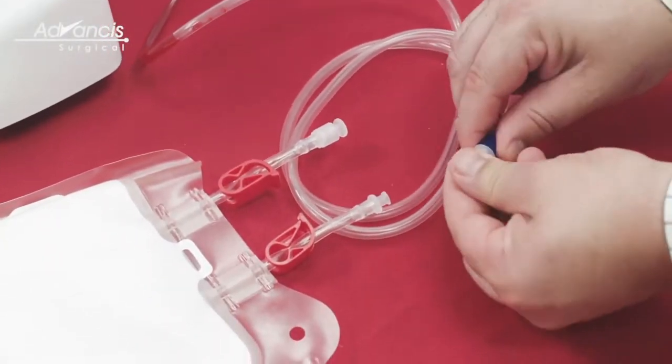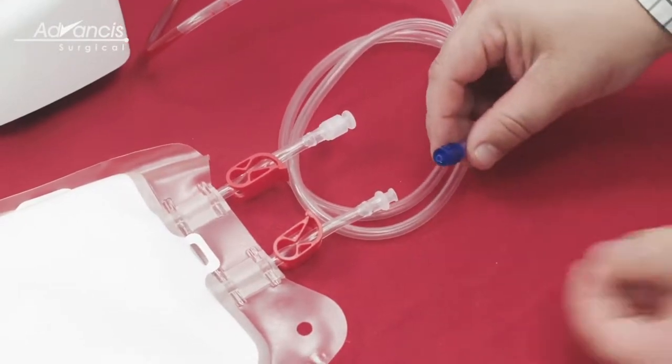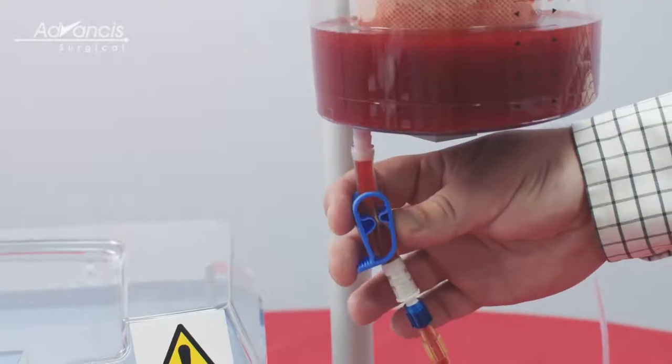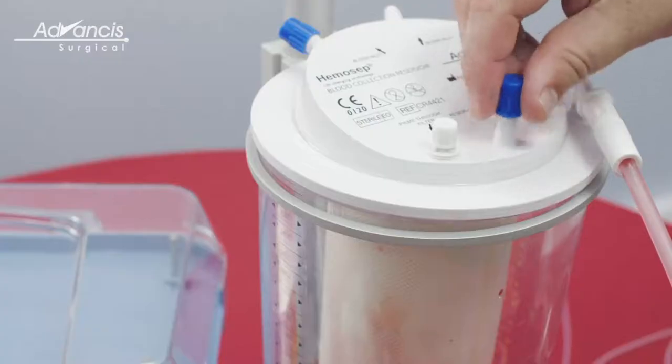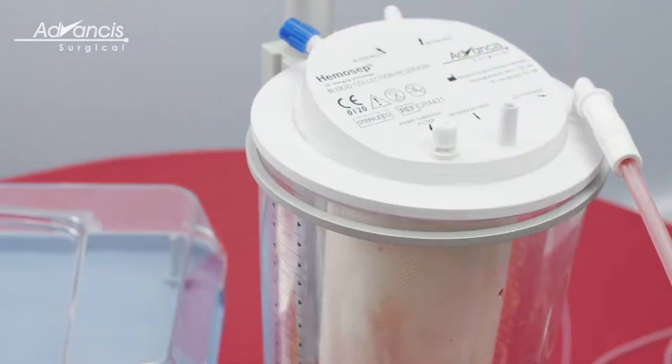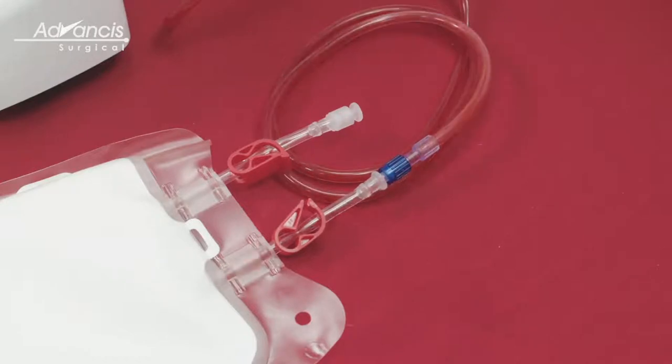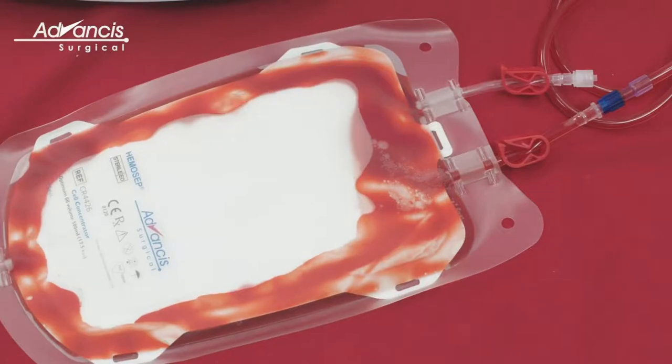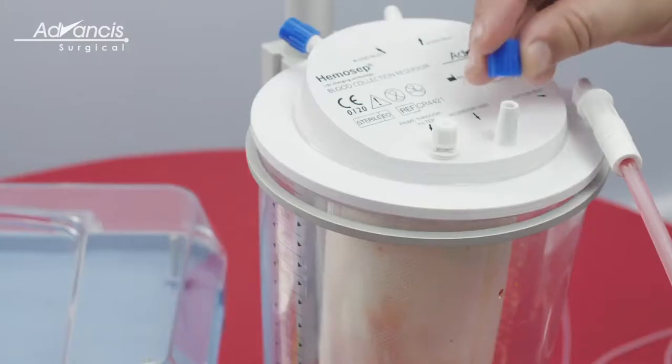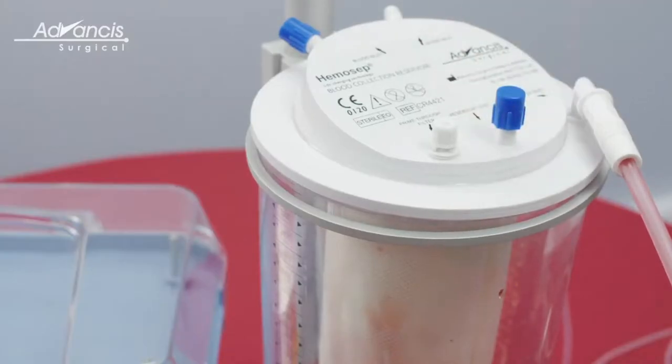Connect the primed blood bag to the blood collection reservoir and open the clamps. Lift the cap on the reservoir vent and blood will flow from the reservoir to the bag. Once the bag is full, replace this cap and continue collection from the surgical field.